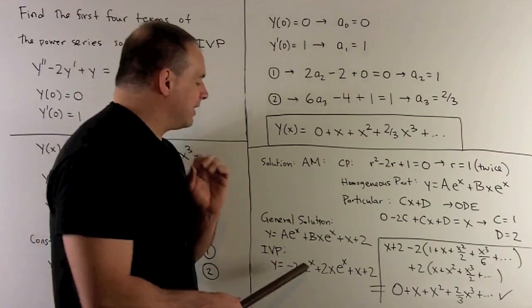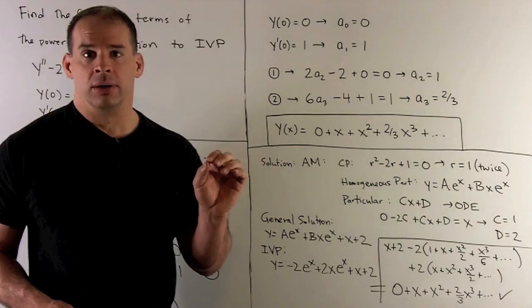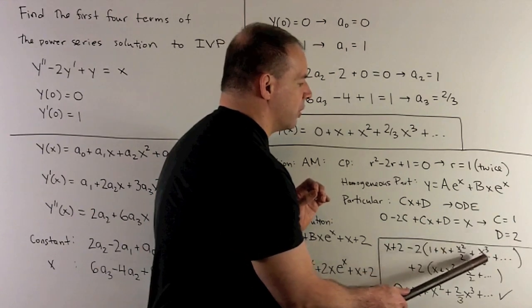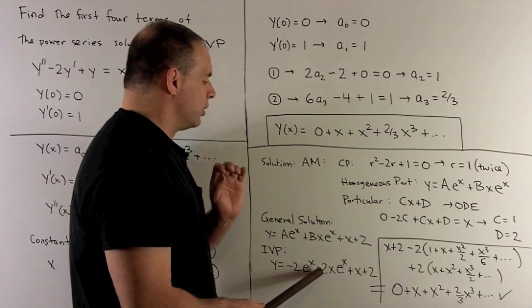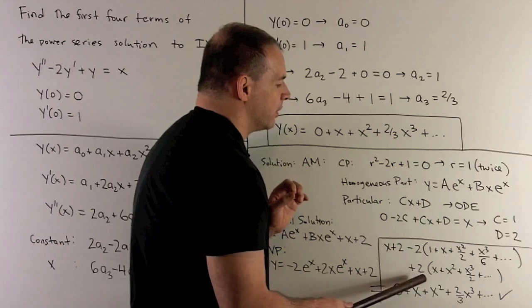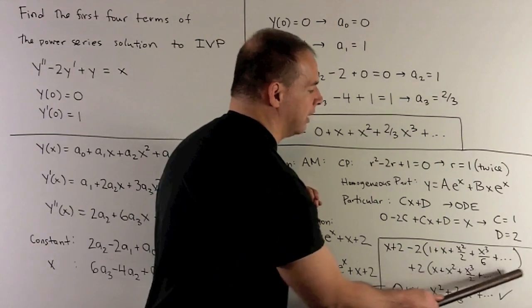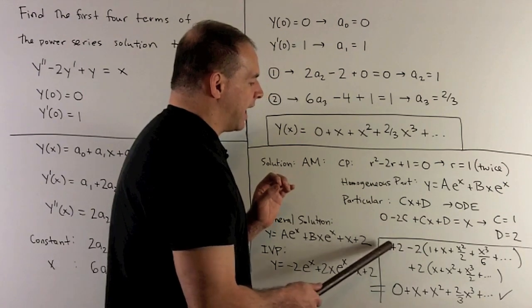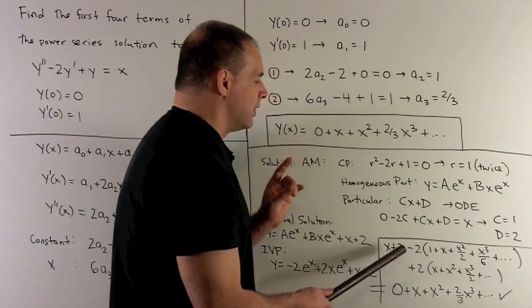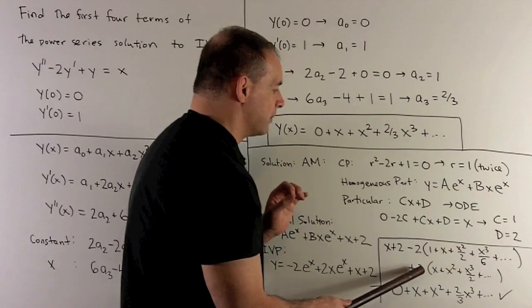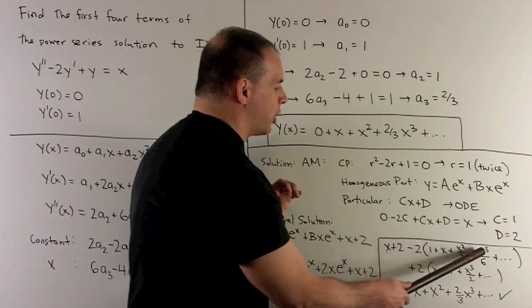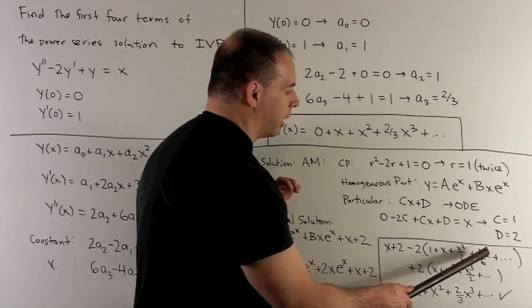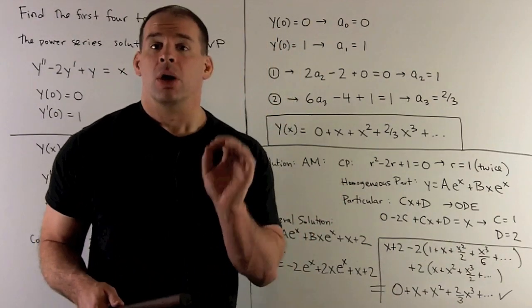To check, we expand e to the x as a power series and collect terms. Writing out: x plus two, then minus two times one plus x plus x squared over two plus x cubed over six, plus two x times x plus x squared plus x cubed over two. Matching terms: two minus two gives zero; x minus two x plus two x gives x; minus x squared plus two x squared gives x squared; and for x cubed, we get x cubed minus one third x cubed, giving two thirds x cubed. This confirms our power series solution.